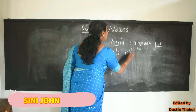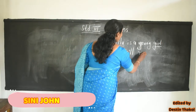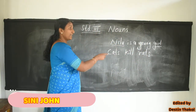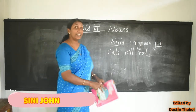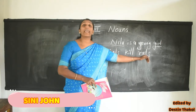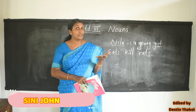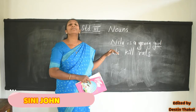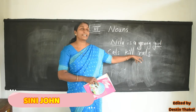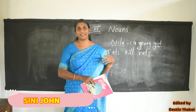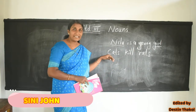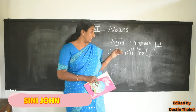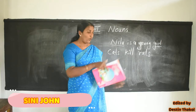Cats kill rats. In this sentence we can see two nouns. Which are they? Cats — a naming word. And rats — another naming word. Cats is a naming word and rats is another naming word. Here we can see name of animals.